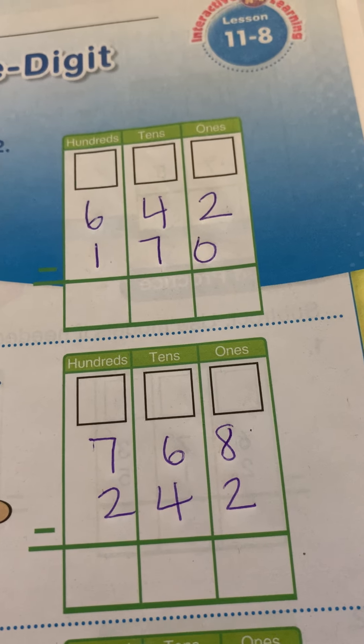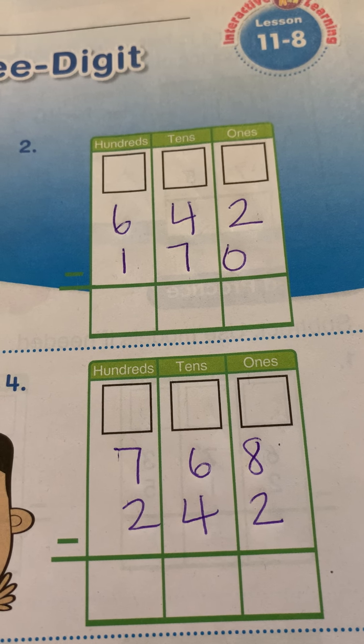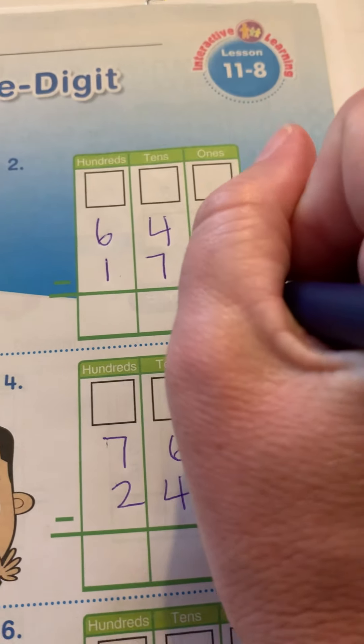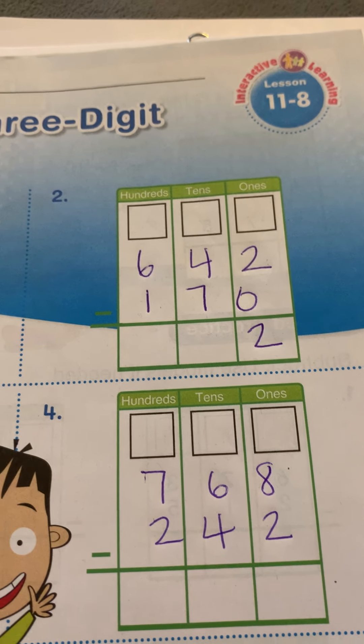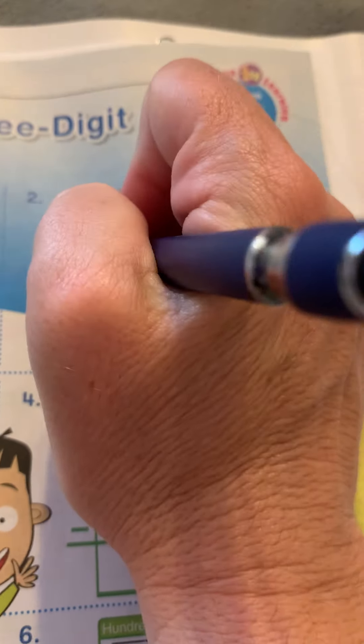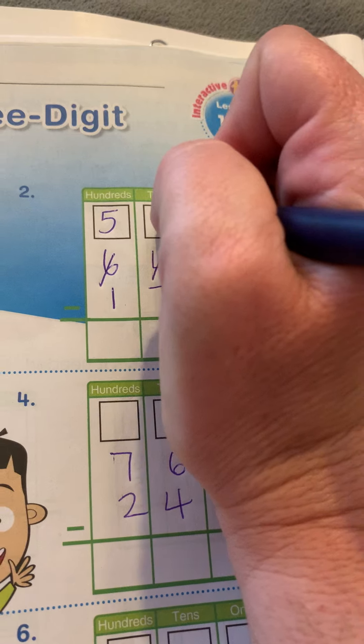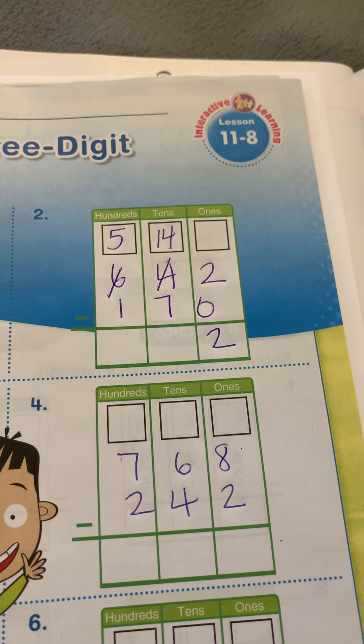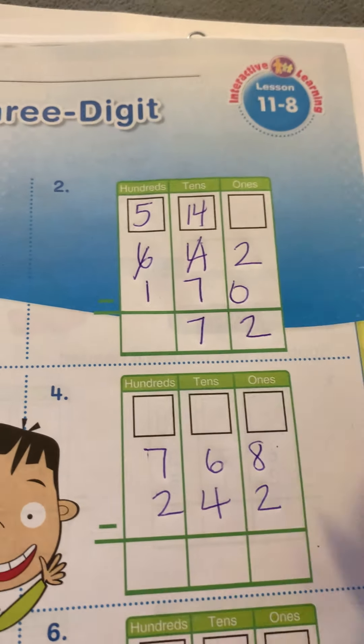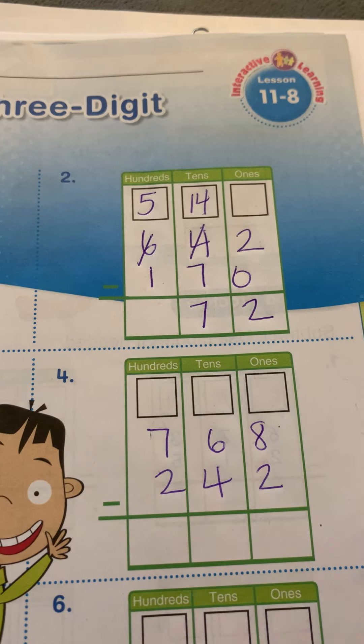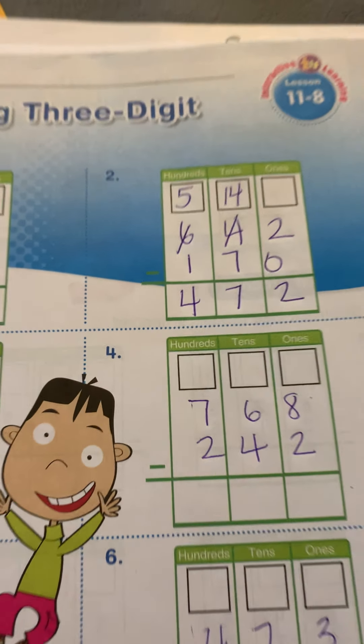Number two, 642 minus 170. So two minus zero is two. Four minus seven. You can't. So I have to cross off the six, make it a five, and make the four a 14. So 14 minus seven is a double. So my answer is seven. And five minus one is four. All right. So one and two are done.